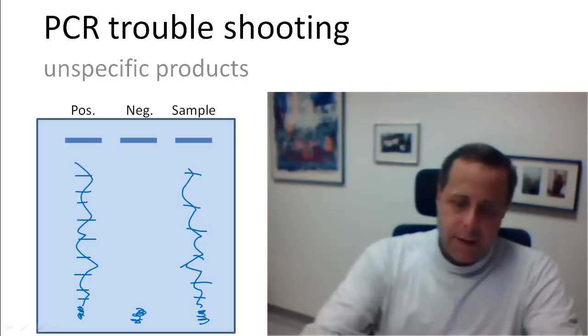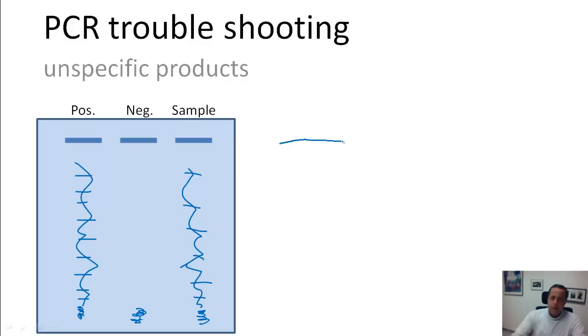So typically you get something like that. This is your template, and what you really wanted to do is to have your primers bind perfectly here and bind perfectly here, and this would then result in a PCR product to be amplified.